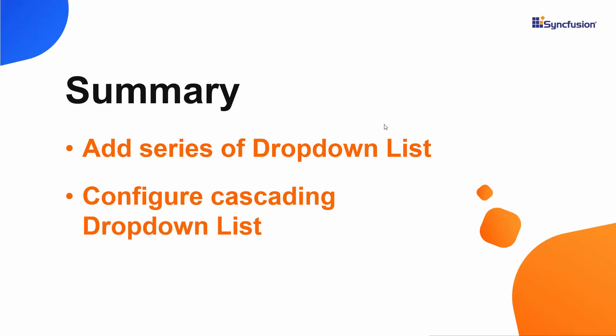In this video, we have seen how to add a series of drop-down list components to an Angular application. We have also seen how to configure cascading drop-down lists. If you would like to see a working example of the lists in this video, you can download it from the GitHub link in the description below. You can also see if you qualify for a free license key to use our Angular products through our community license.